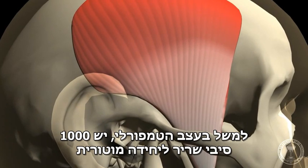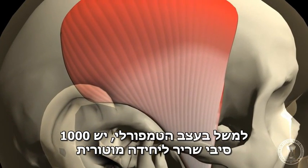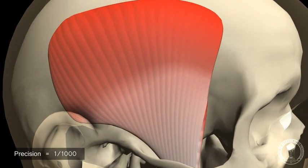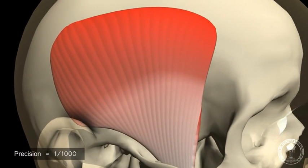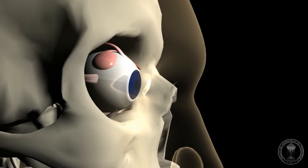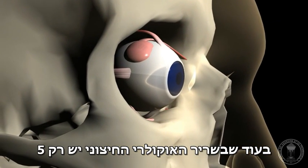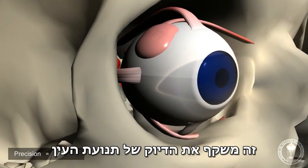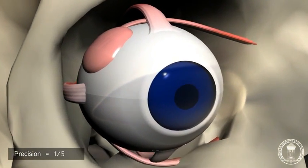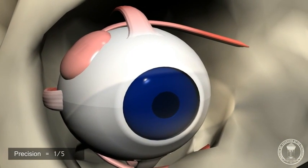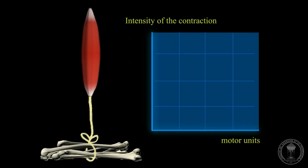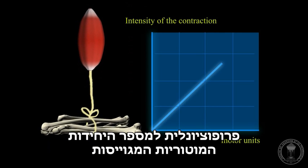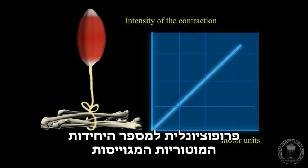For example, in the temporalis muscle, there are a thousand muscle fibers per motor unit, while in the external ocular muscle there are only five. This reflects the accuracy of the eye movements. The intensity of the muscle contraction is proportional to the number of motor units recruited.